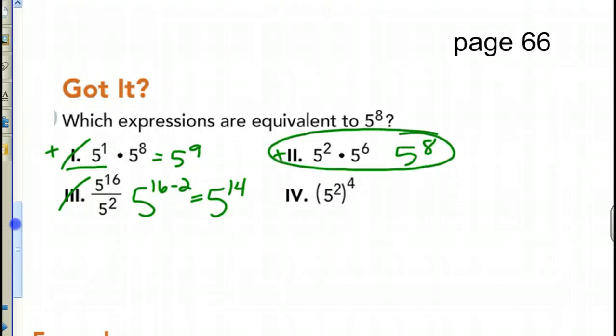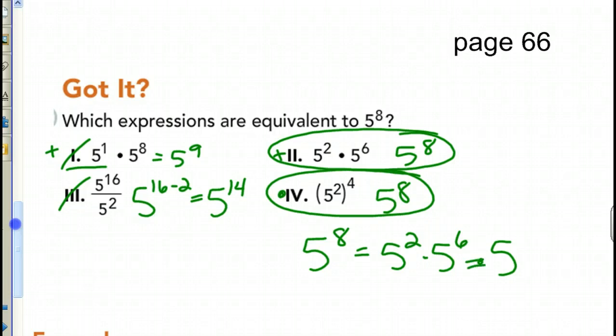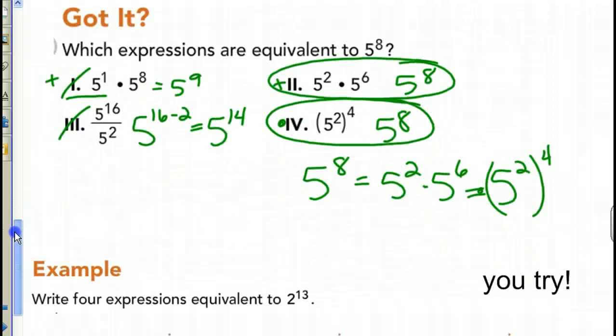This one, we multiply our exponents. So, we'll get 5 to the 8th. This one is also equivalent. So, notice all the different ways you can write 5 to the 8th. 5 to the 8th can be 5 to the 6th times 5 to the 2nd and 5 to the 2nd to the 4th. 5 squared to the 4th power. So, they're all equivalent.